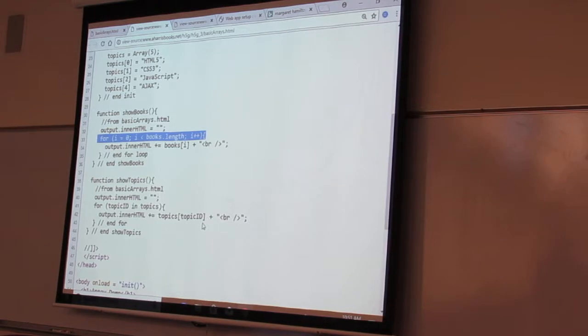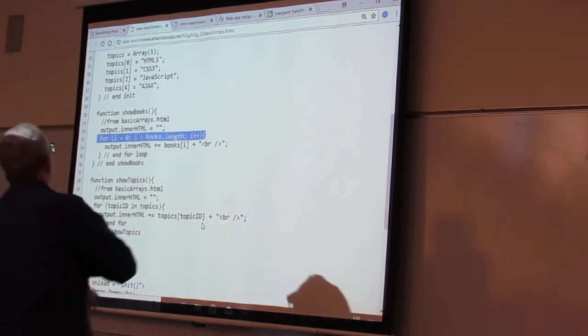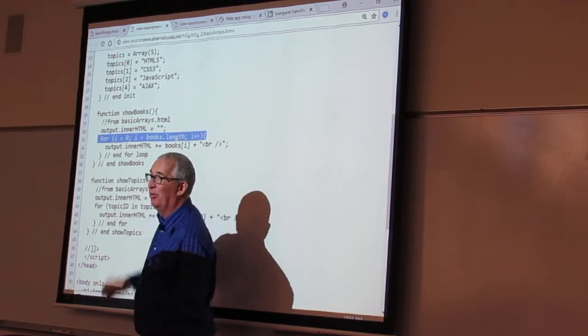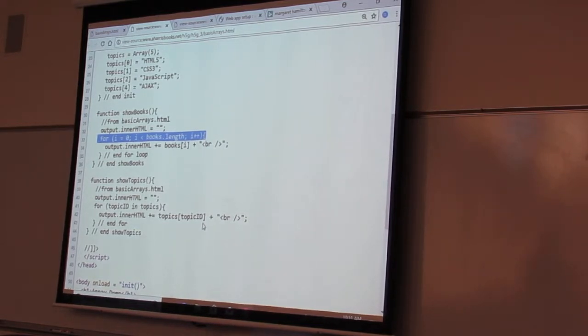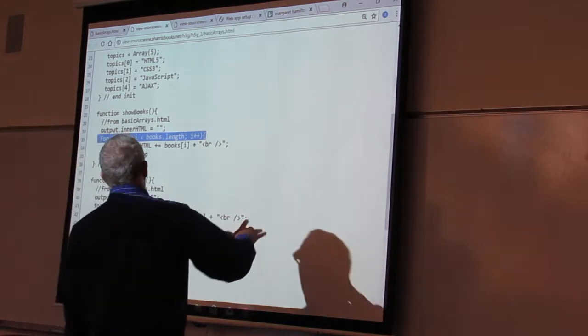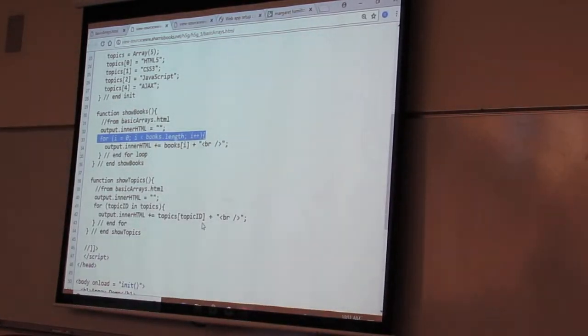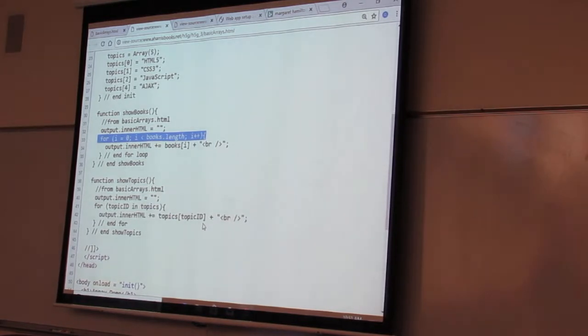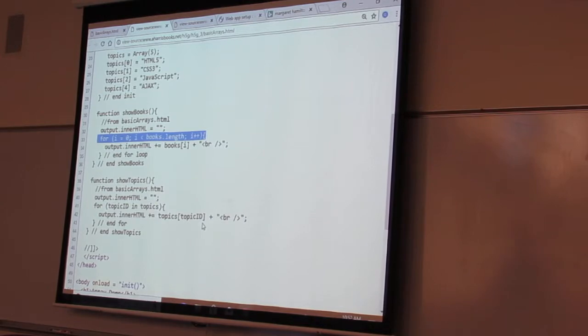This 'show books' - we're gonna clear out the inner HTML of the output area. You've seen that statement before. We have a for loop. This for loop uses as its sentry 'i'. How does it start? Zero. How does it stay in the loop? 'i' is less than books.length.